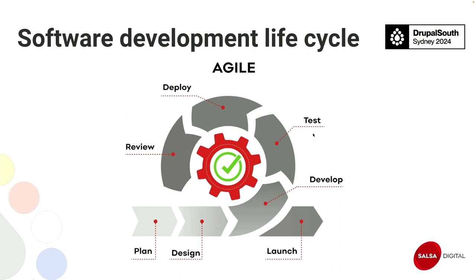In Agile, as you can see, there is a normal iterative approach you can follow: plan, design, develop, and then test. Then deploy, review, and launch. If you look into the testing step, it could be manual or automated. You can use multiple types of tools — Behat is a very famous framework you can use, and Drupal itself provides a unit testing framework in PHP.